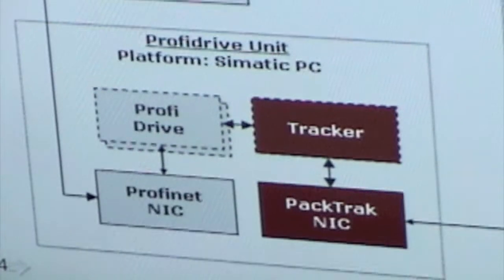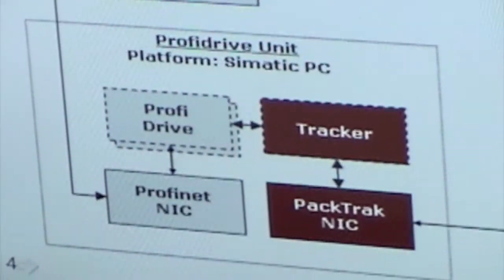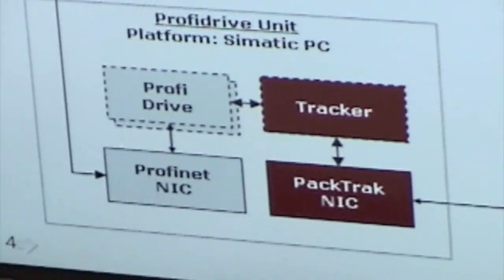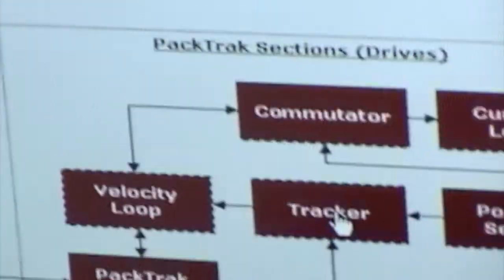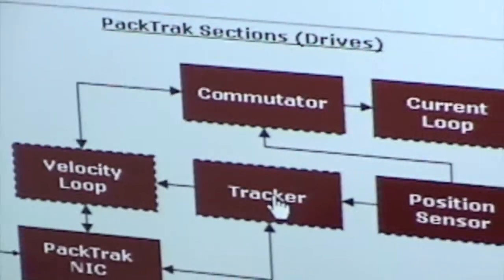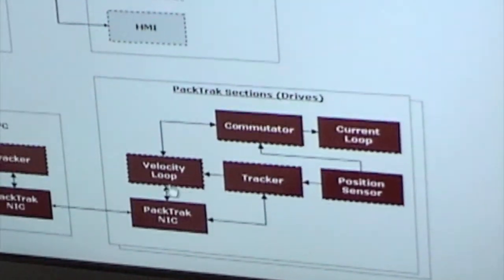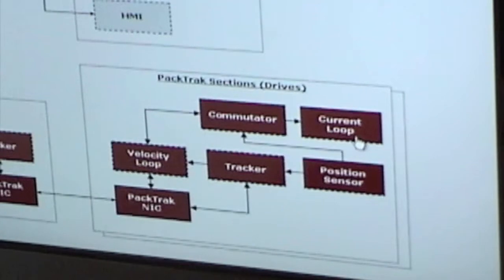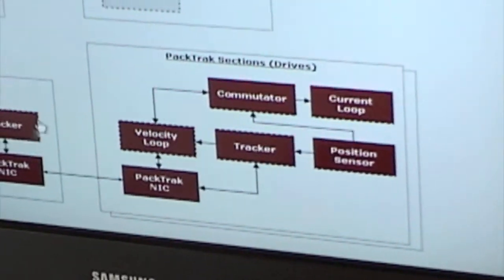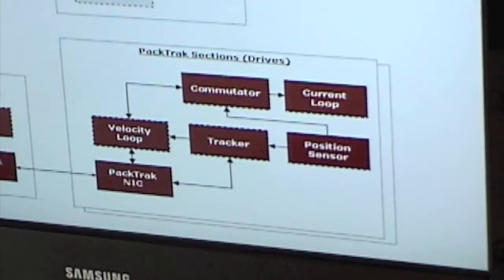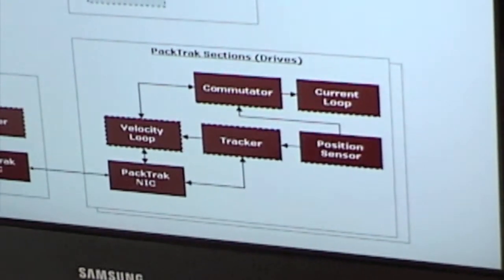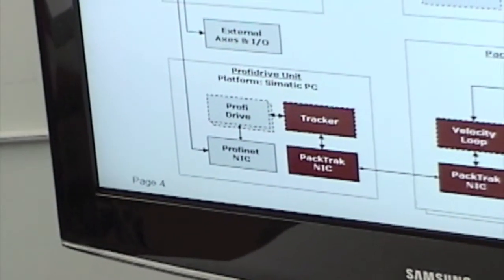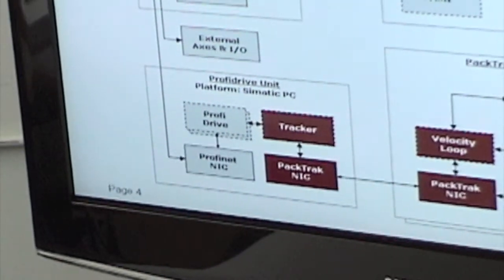It shunts it over to the drive, closes the velocity loop, commutates, current loop — the usual functions. There's also Tracker, and it's not the usual stuff because you've got five things on four drives, so there's more to it. The velocity loop, commutator, and current loop are nothing particularly unique, but the thing that's really unique is this Tracker function, or Drive Virtualizer, that keeps track of the fact that this axis is now on a different drive.